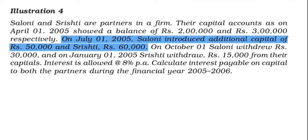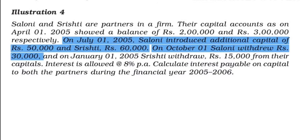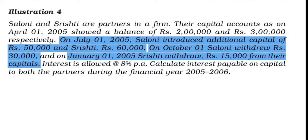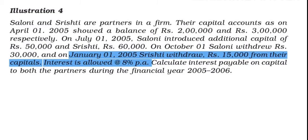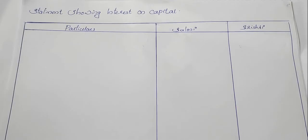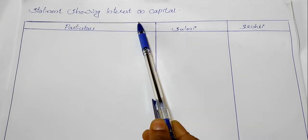In July, Saloni adds additional capital of 85,000 rupees and Srishti adds 1 lakh. On October 1st, Saloni adds 1 lakh. In January 1st, Srishti adds 1 lakh. We will now calculate the interest on capital for Saloni and Srishti.